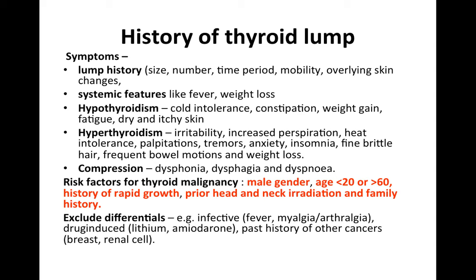Ask about risk factors for thyroid malignancy: age less than 20 or greater than 60 years, male gender, rapid growth of the lump, prior head and neck irradiation from Hodgkin's when younger, and family history. Also exclude differentials — for example, fever, myalgia, and arthralgia for infective thyroiditis; whether they're taking lithium or amiodarone, which can cause thyroiditis; and any past history of cancer such as breast or renal cell, which can metastasise to the thyroid.